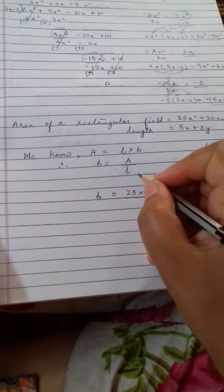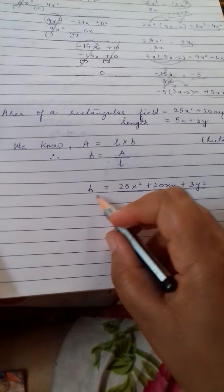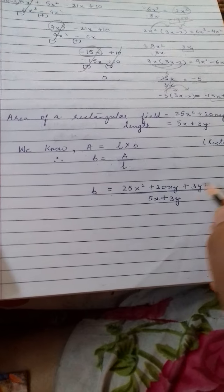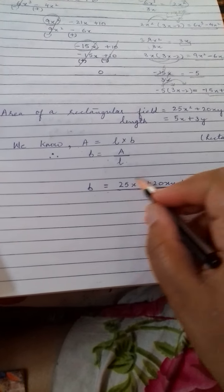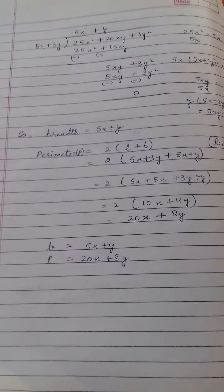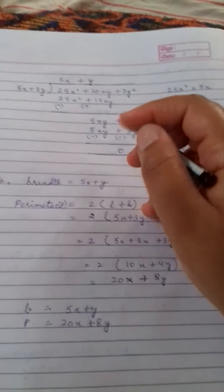This L will go this side and L in the denominator. Now, breadth is equal to area upon length. And what is the area given? This. And what is the length given? This. So here we are going to use division which we have learnt so far to divide it. Let's divide.